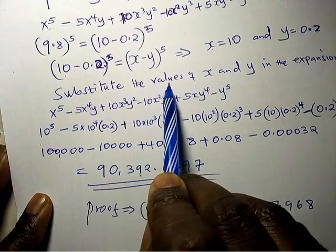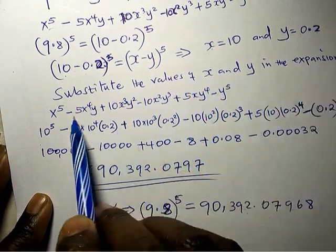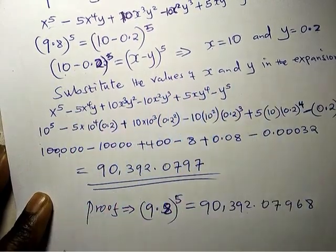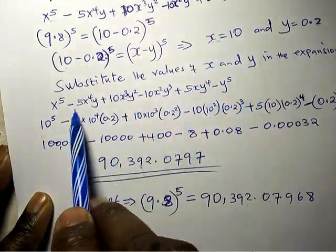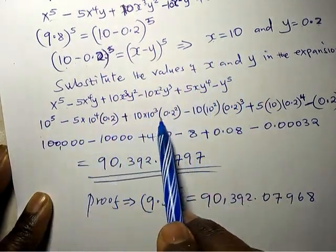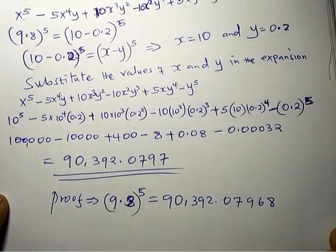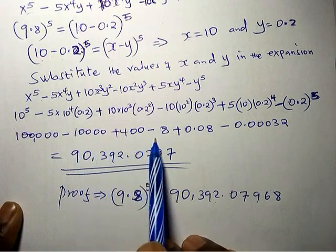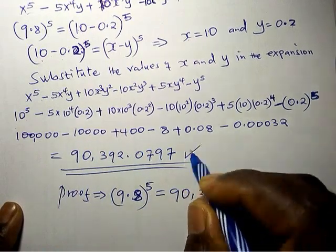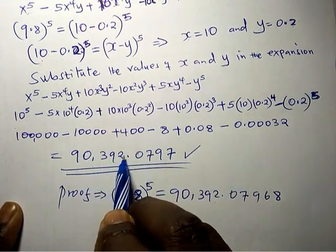Now substitute the value of x and y in the expansion. When you substitute the values of x and y, you get this equation here, a very long one. Finally, the final answer is 90,392.